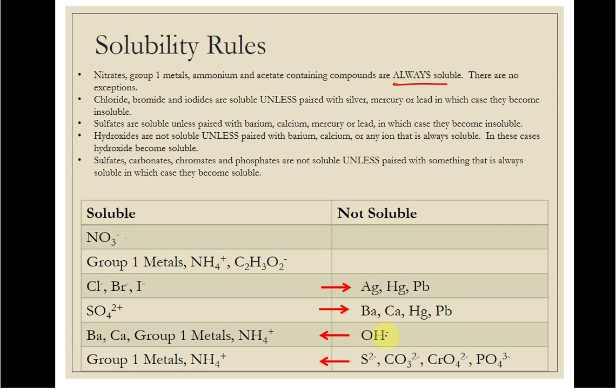Hydroxides, this one starts over here. You start on the end of the arrow. Hydroxides are insoluble unless paired with barium, calcium, group 1 metals, or ammonium. Calcium hydroxide, barium hydroxide, sodium hydroxide, these things are soluble. And then sulfides, carbonates, chromates, and phosphates typically are not soluble unless they're with group 1 metals or ammonium.